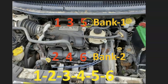The cylinder locations at the back against the firewall are one, three, five. Directly at the front are two, four, six. Bank one is against the firewall and bank two is at the front.